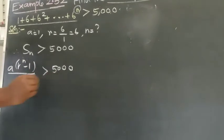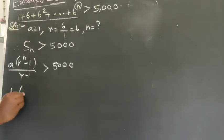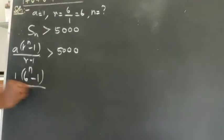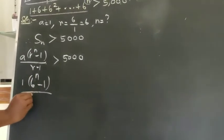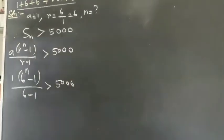Substitute the values: a equal to 1, r equal to 6. So 1 times 6 power n minus 1 divided by 6 minus 1 greater than 5,000.